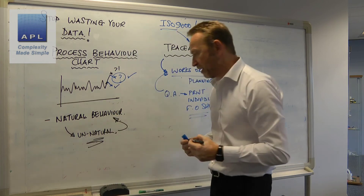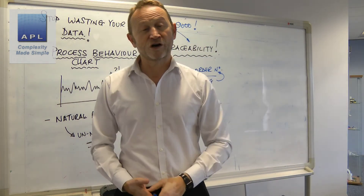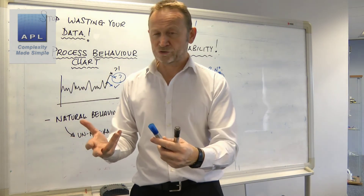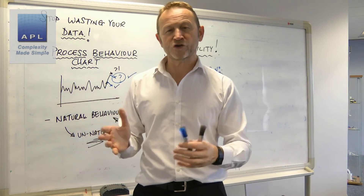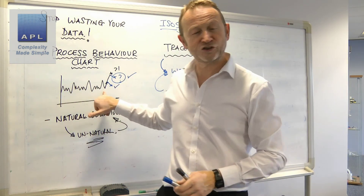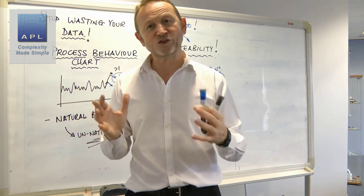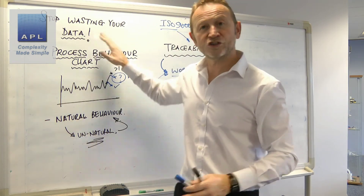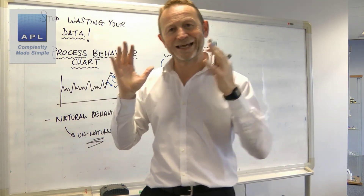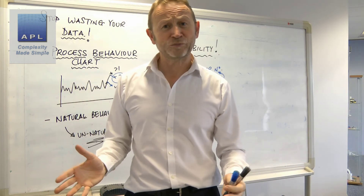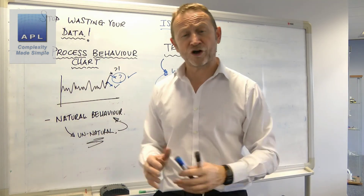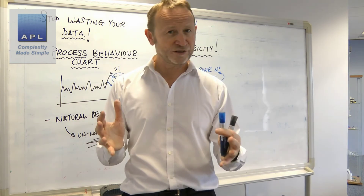If we can see the natural process behavior, we can spot when the process is demonstrating something unnatural. That might tell us when the first-off is not right — and the first-off takes about an hour to get results back. Maybe we can see that just from a simple process behavior chart. This isn't unique to this company — lots of clients put data in the most inaccessible, unanalyzable places.